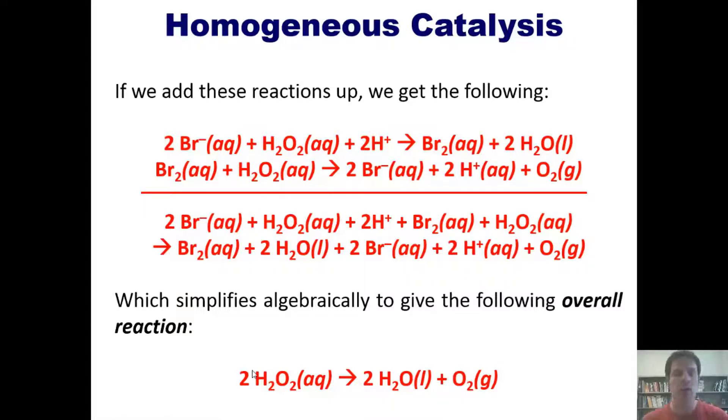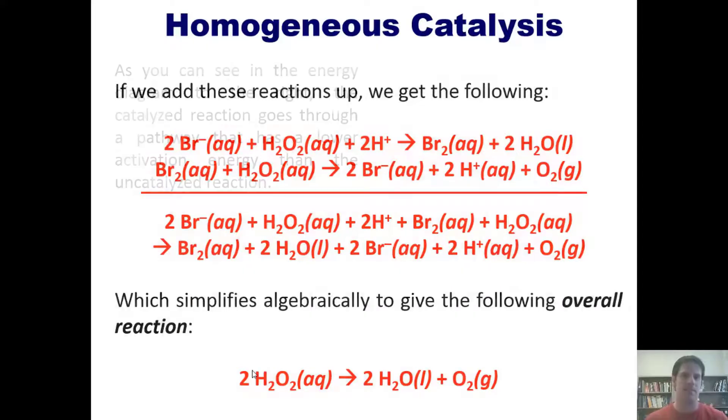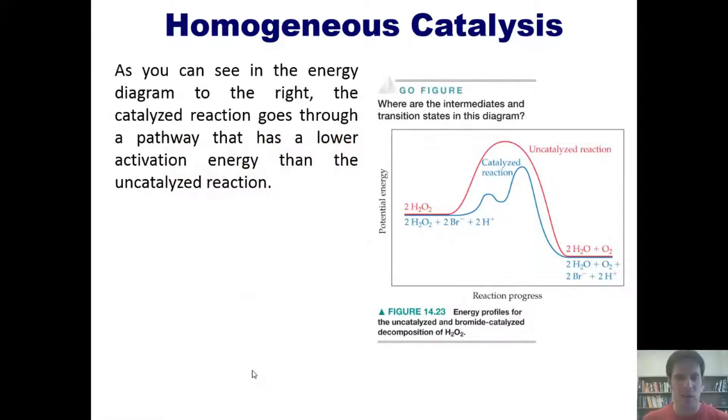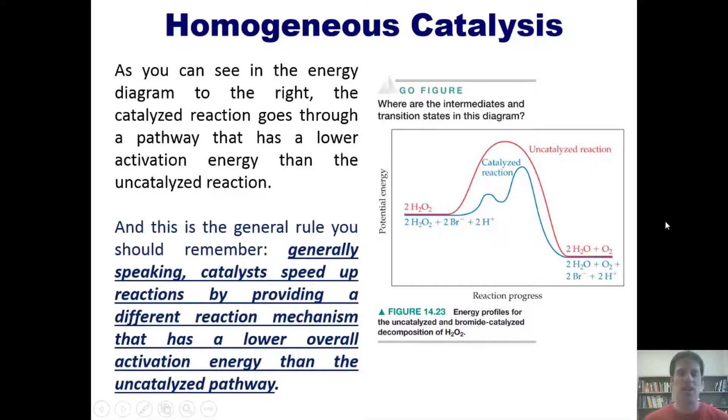As you can see in this energy diagram right here, the catalyzed reaction goes through a different energetic pathway than the uncatalyzed reaction. That pathway is lower in energy—these hills are smaller, which explains why the catalyzed process is easier, faster, and requires less energy than the uncatalyzed reaction, which has to traverse this larger hill that's colored in red. That's a general rule you should remember.